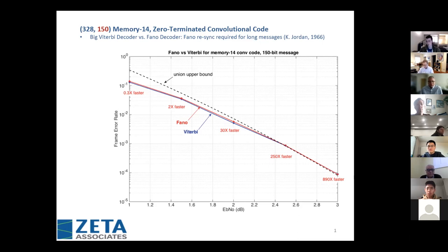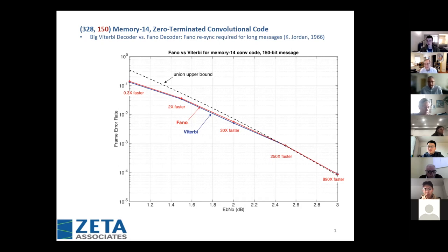As a side note, around 1990 JPL was working on a memory-14 convolutional code — the decoder they called the big Viterbi decoder. I asked both Steve Wilson and Dariush why they didn't use a Fano, and they both came back with basically the same answer: Fano has problems for really long messages. Back then they liked to stream messages rather than packetize them, and this is a very short packet.